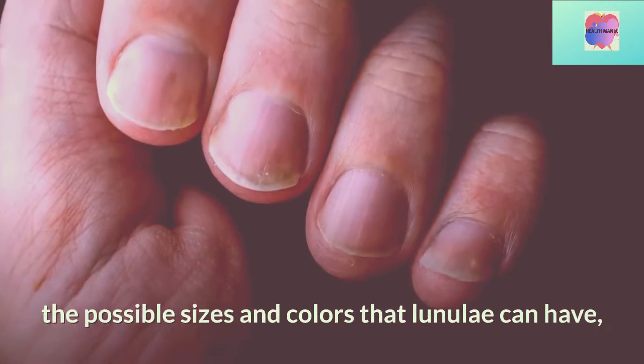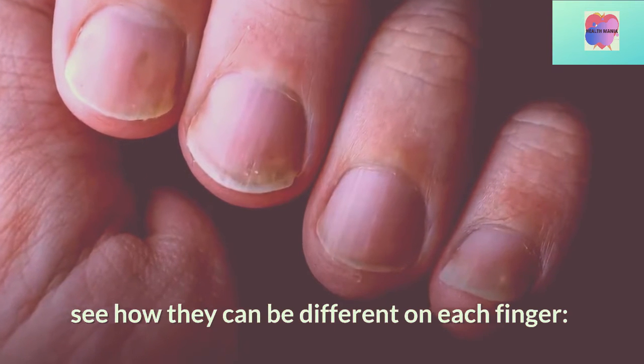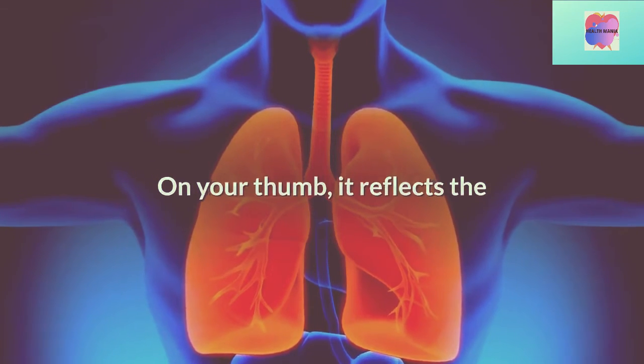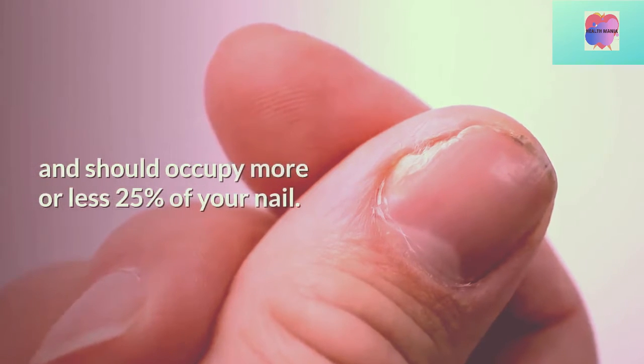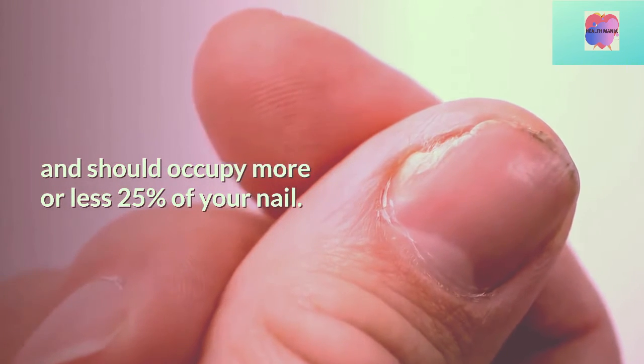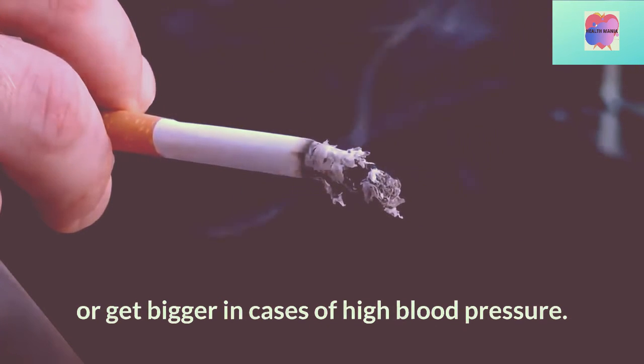Now that we have talked about the possible sizes and colors that lunulae can have, see how they can be different on each finger. On your thumb, it reflects the functioning of lungs and spleen. It is the biggest one of all and should occupy more or less 25% of your nail. It can get smaller in smokers or get bigger in cases of high blood pressure.